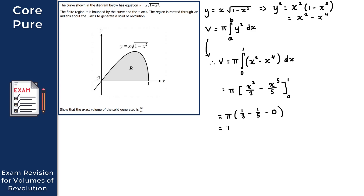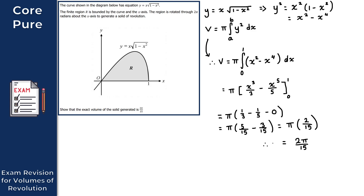Simplifying: π times 1 over 3 minus 1 over 5. Getting a common denominator of 15 gives 5 over 15 minus 3 over 15, which equals 2 over 15. So we get π times 2 over 15, which gives us 2π over 15 as required. Therefore V equals 2π over 15, giving the solution to question 2.